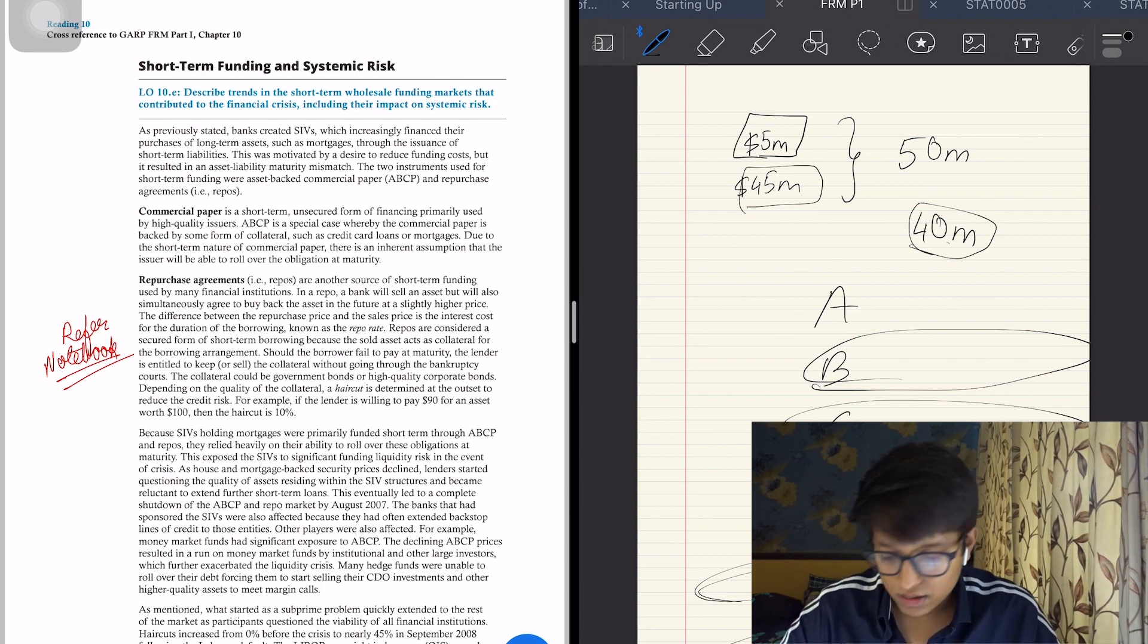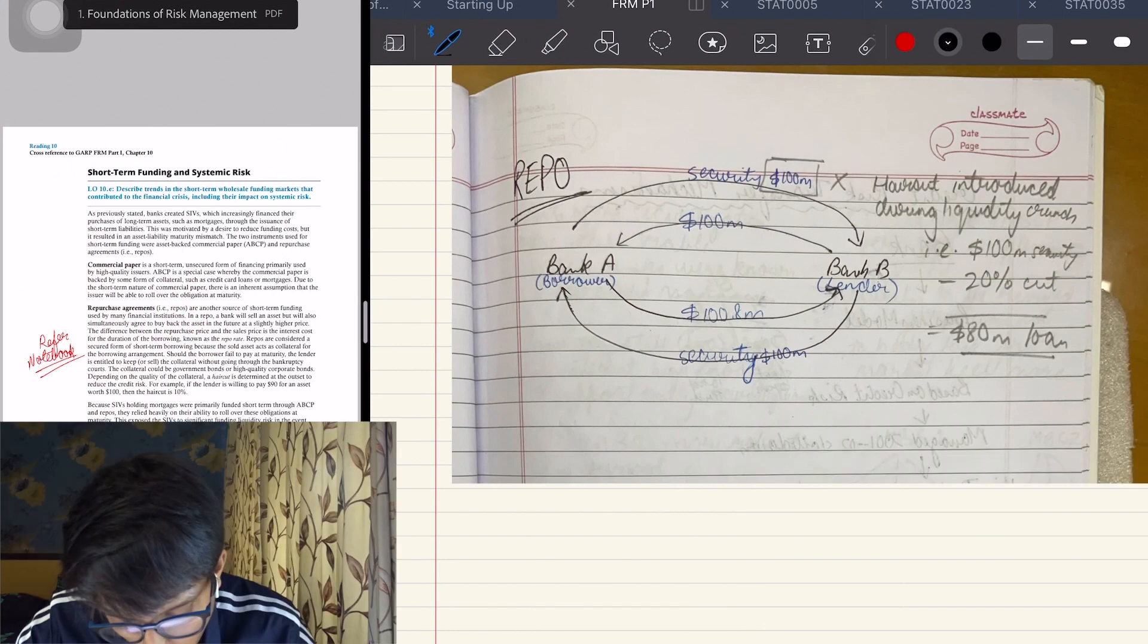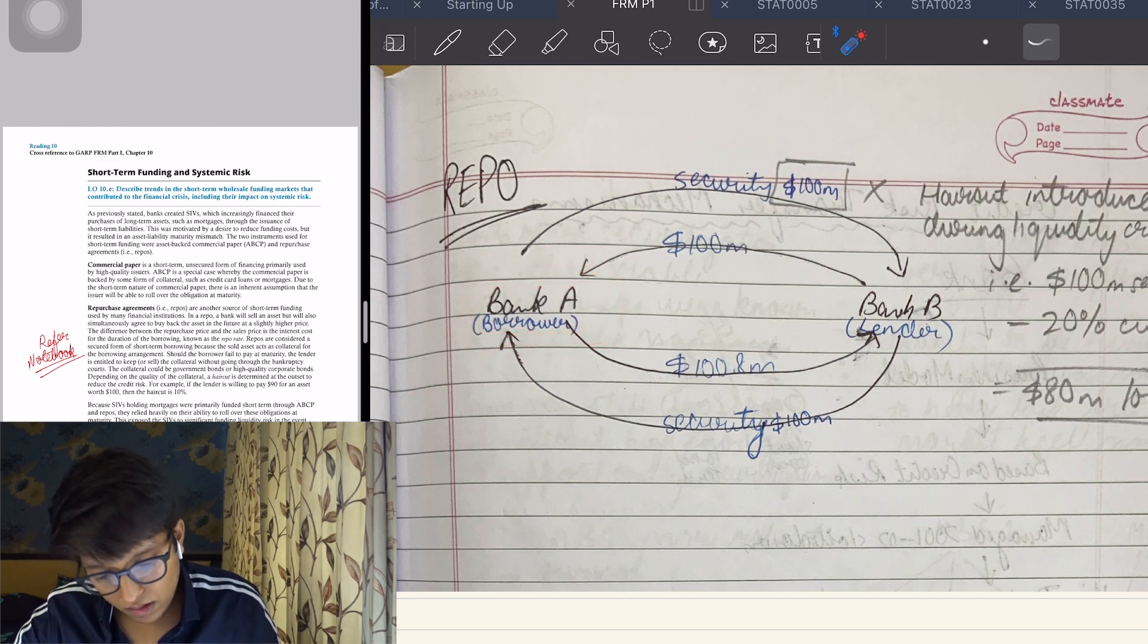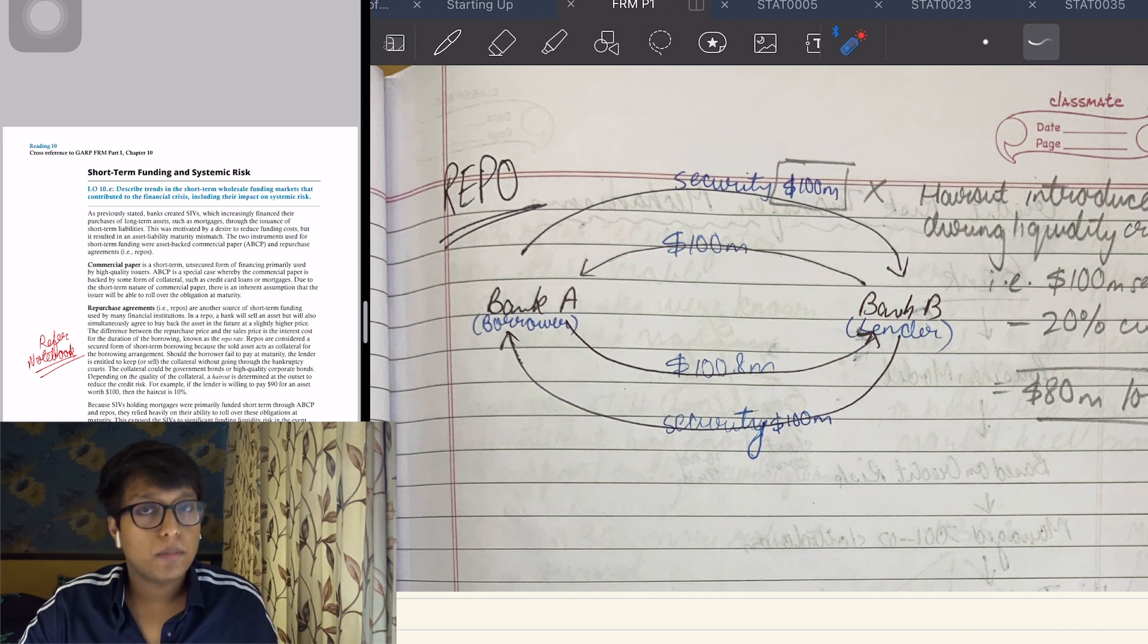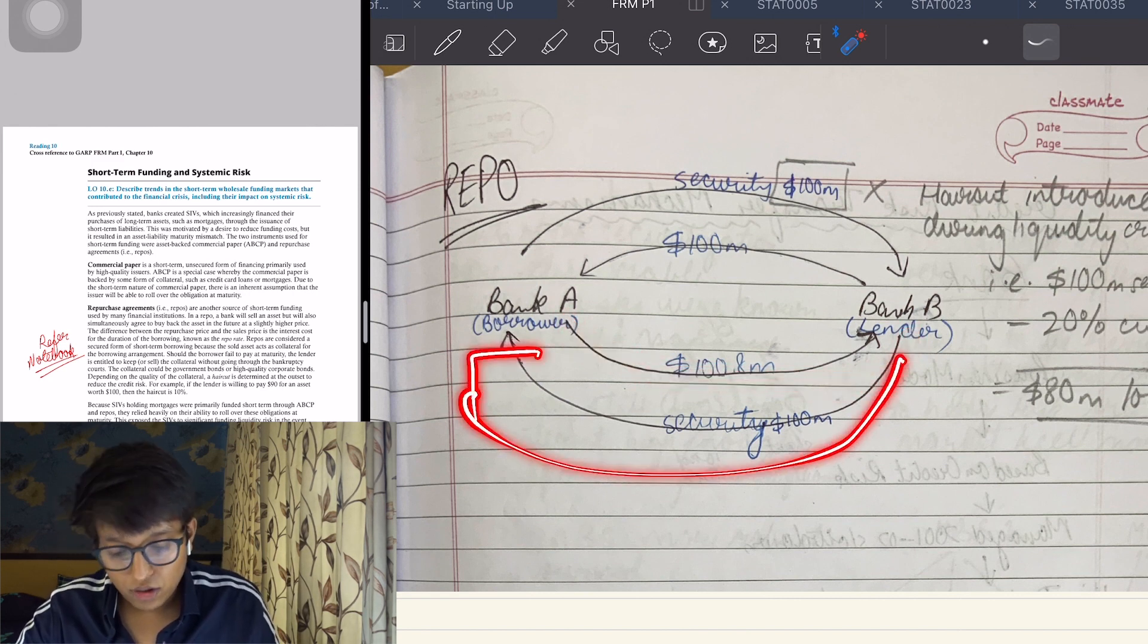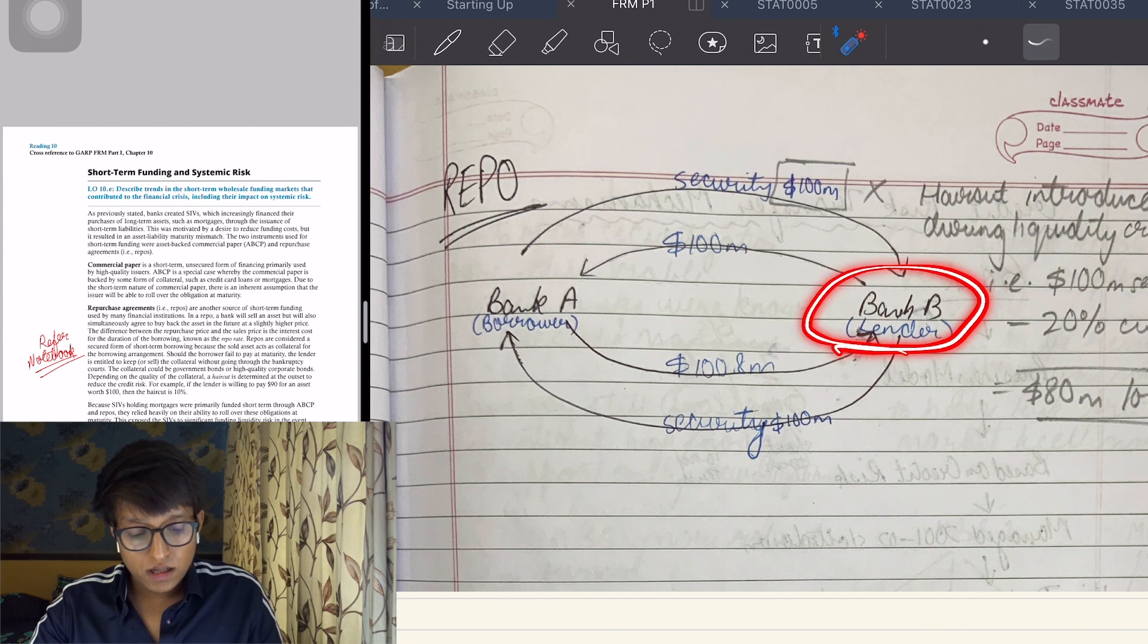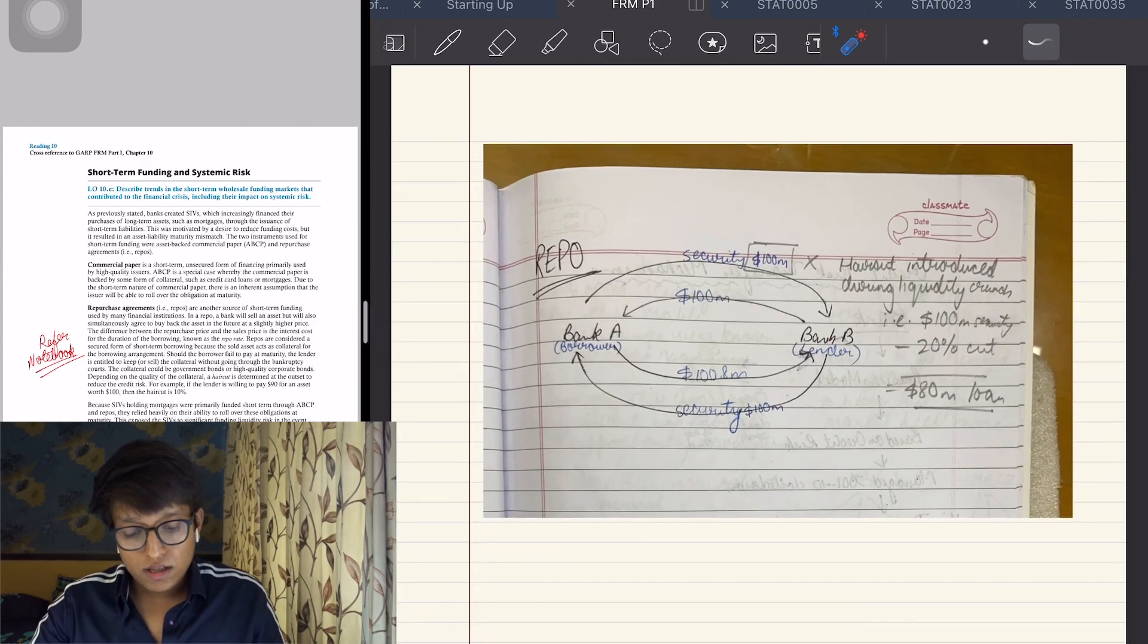Short-term funding and systemic risk - repurchase agreements. I'll show it over here what it means. The first step is Bank A which has to borrow money. What they do is they give you a security worth one hundred million and say 'you give me one hundred million now.' After the end of the period, I will give you back one hundred plus interest - 100.8 million - and you give me back my security. But what if the value of the security falls below one hundred million? This Bank B puts a haircut - they say 'you give me one hundred million, I'll give you only eighty.' This is prevalent even now when you pledge your stocks.